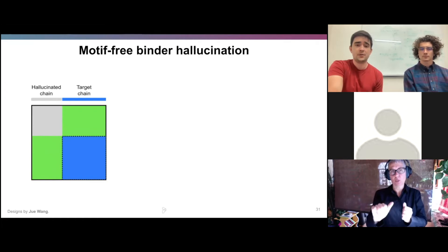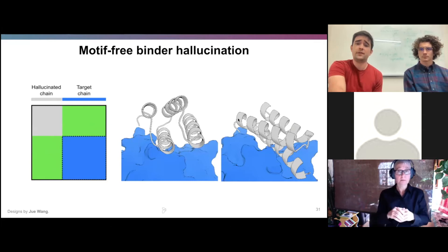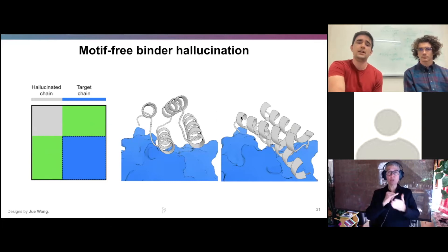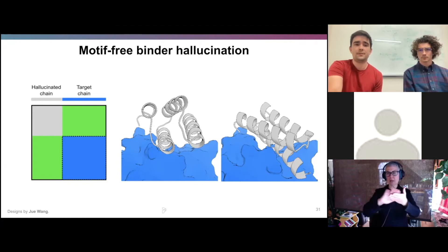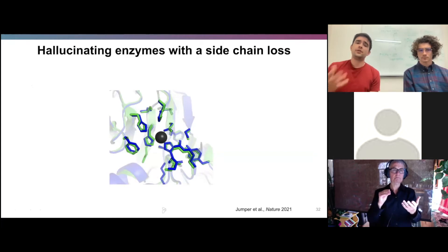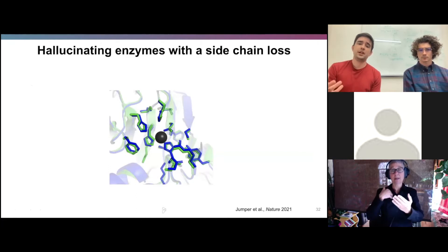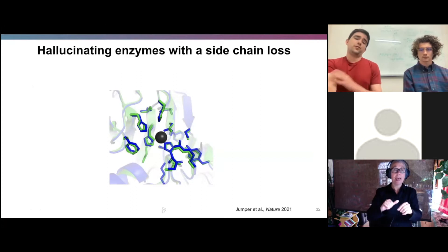From preliminary results, it seems you can do both — hallucinated designs in gray shown to the TrkA protein are proximally situated to the surface and generally have nice shape complementarity to it. Additionally, these new structure prediction methods not only have accurate main chain structure prediction, but they can predict the geometry of side chains very accurately, which is most useful for designing enzymes.